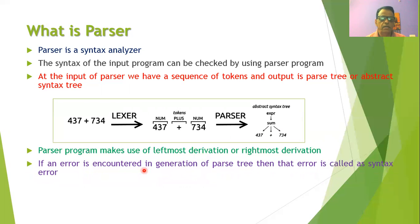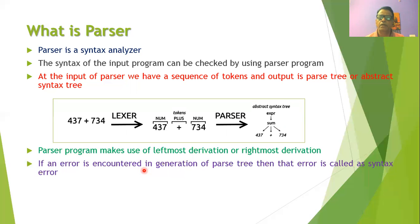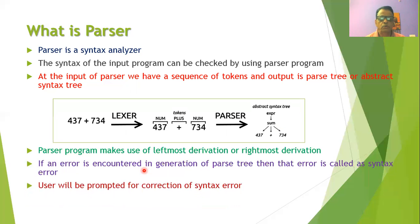If an error is encountered during generation of the parse tree, such an error is called a syntax error. Every compiler has an error handler that handles errors generated in syntax analysis. The user will be prompted about the correction of the syntax error, and only then will further compilation take place.